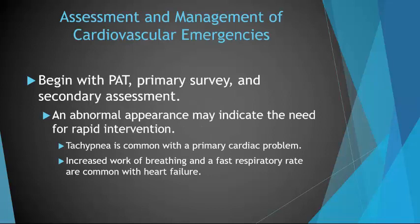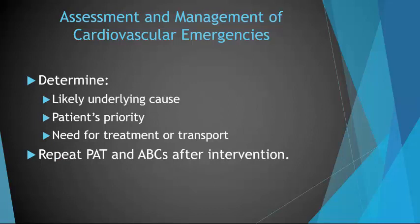For your assessment and management of cardiovascular emergencies, you're always going to begin with your pediatric assessment triangle, primary survey, and secondary assessment. An abnormal appearance may indicate the need for rapid intervention. Look for abnormal vital signs and abnormal breathing rates — tachypnea is common with a primary cardiac problem, and increased work of breathing with a fast respiratory rate are common with heart failure. Determine the likely underlying cause, the patient's priority status (sick/not sick, critical/not critical), the need for treatment or transport, and always continue to repeat your PAT and ABCs after intervention.